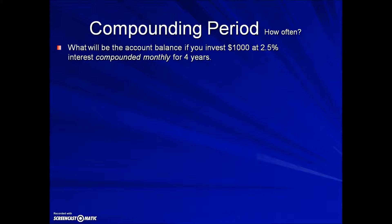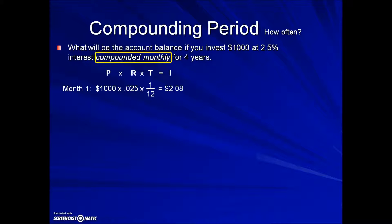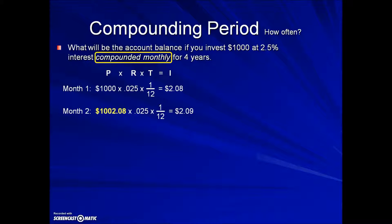What will be the account balance if you invest a thousand dollars at two and a half percent interest compounded monthly for four years? Using the simple interest formula, we calculate the interest monthly: one thousand dollars times the interest rate as a decimal, times one-twelfth of a year. This amounts to two dollars and eight cents. The next month, the interest from the first month gets added on, so the interest goes up slightly, and this pattern continues.